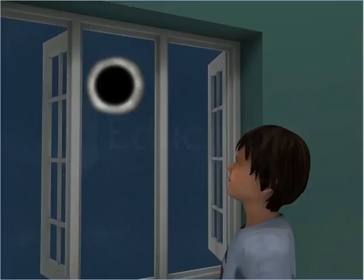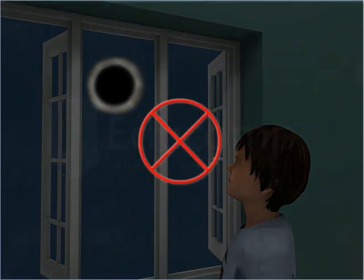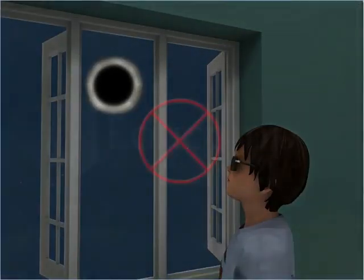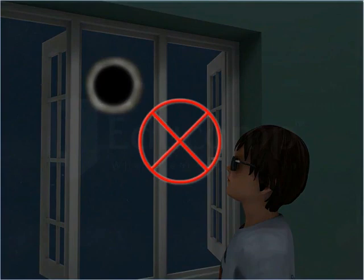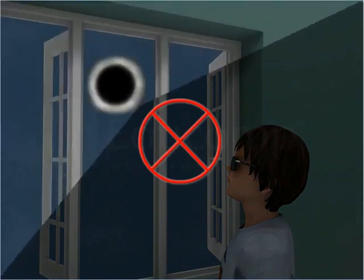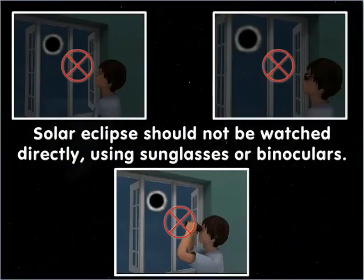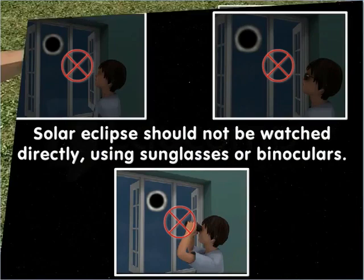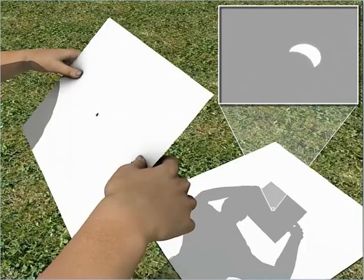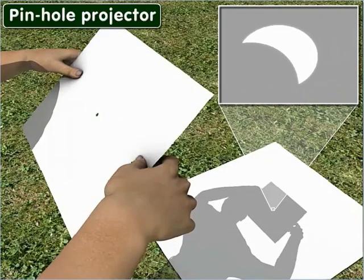It is dangerous to look at a solar eclipse directly using sunglasses or binoculars. The best way to watch it is through a pinhole projector.